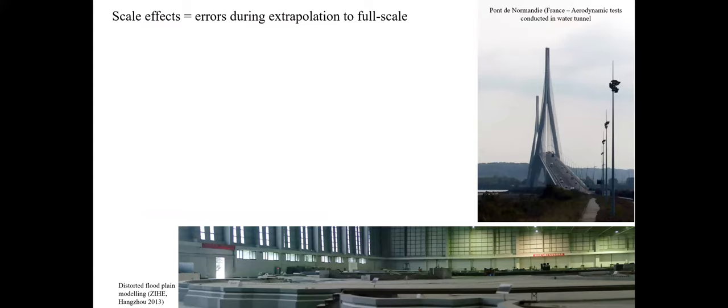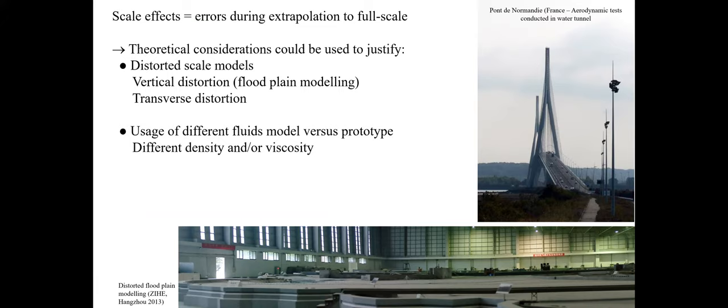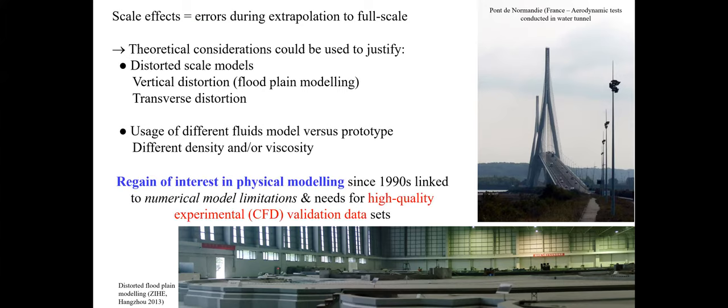Physical model data have to be extrapolated to full scale, accounting for potential scale effects. Scale effects could be reduced using distorted scale models or using different fluids between model and prototype. Interestingly, we have seen in the last 10 years a regain of interest in physical modeling, linked to the limitations of numerical models and the need for high-quality validation datasets for computational fluid dynamics.